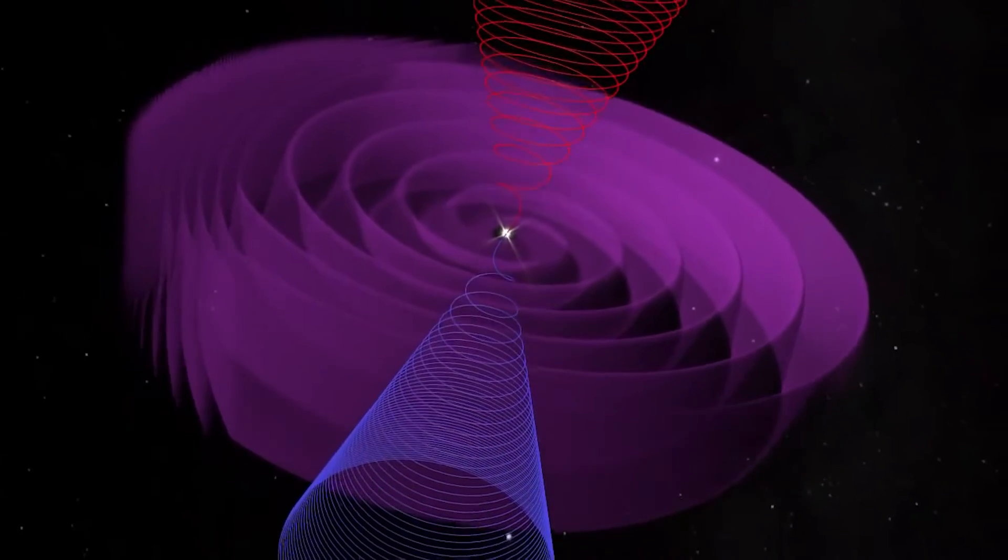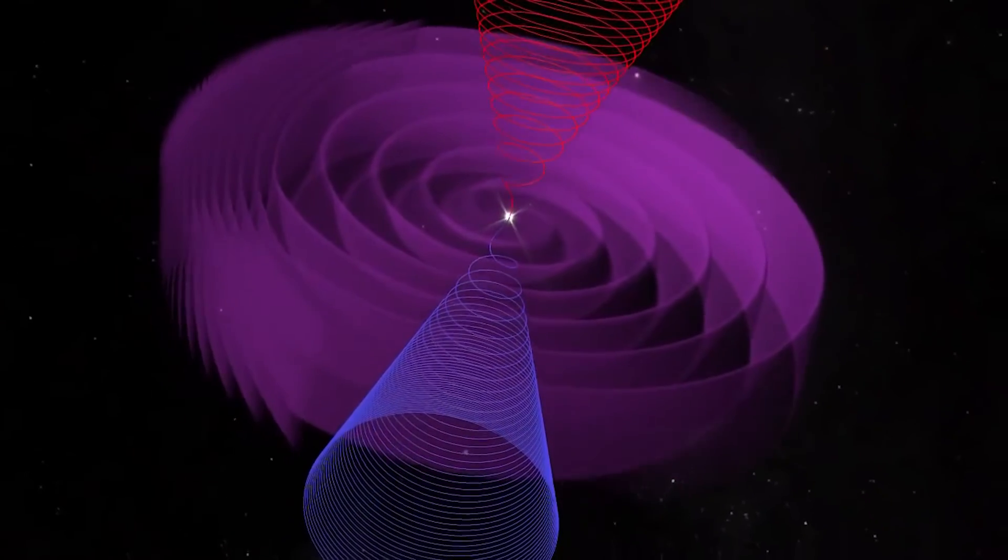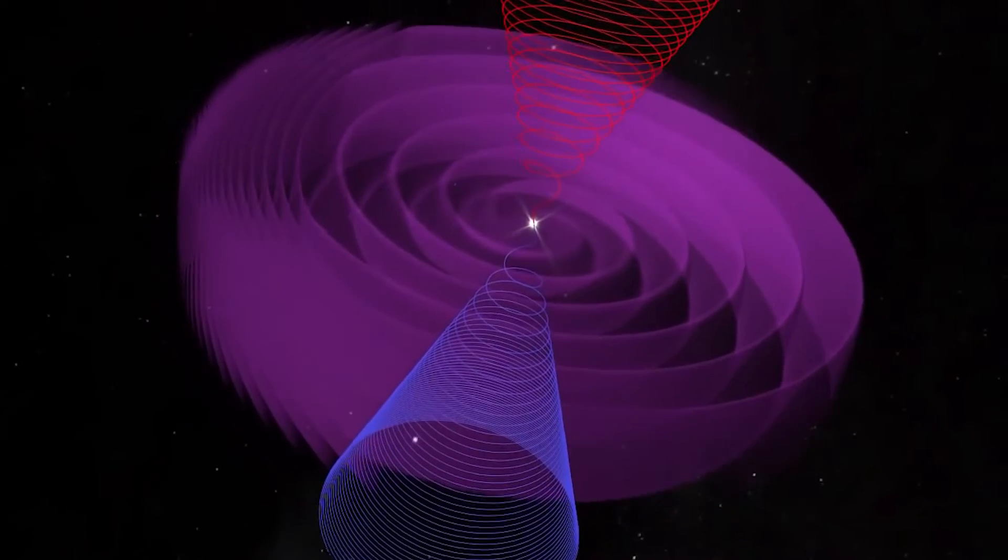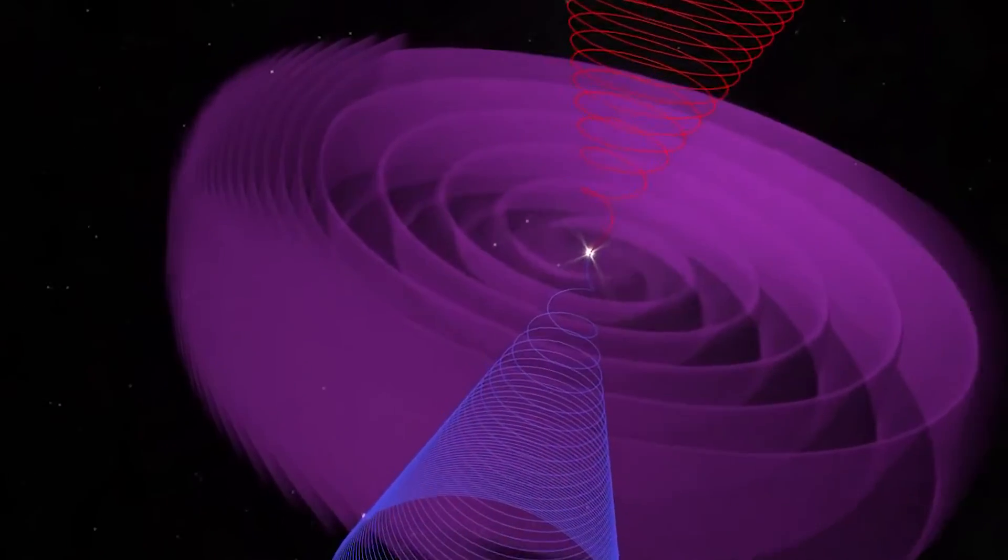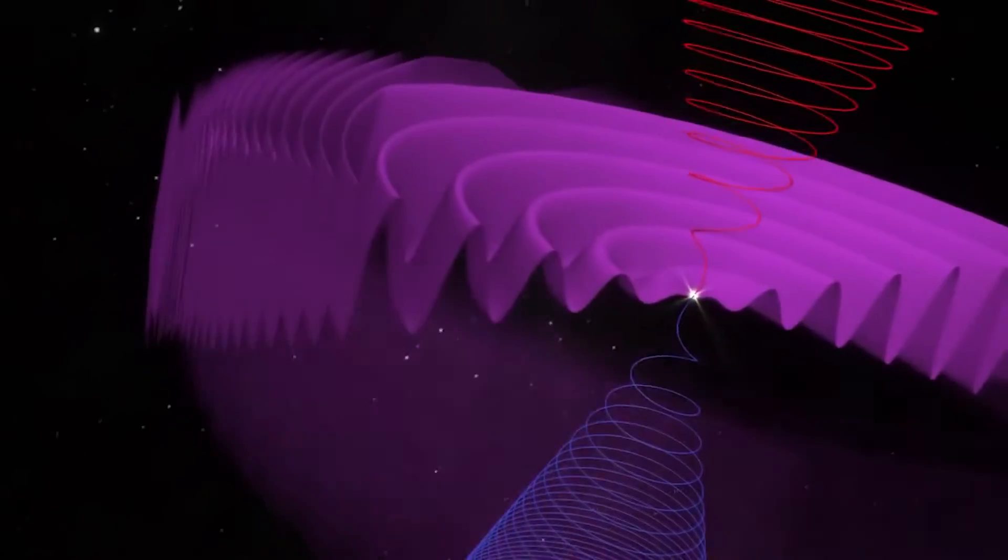Recent years have confirmed what scientists have known for a while. The heliopause is not a static feature of the solar system, and its form evolves with time. NASA's Interstellar Boundary Explorer, or IBEX satellite,